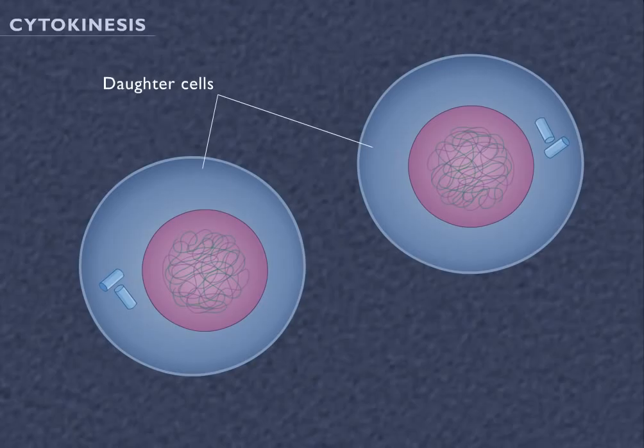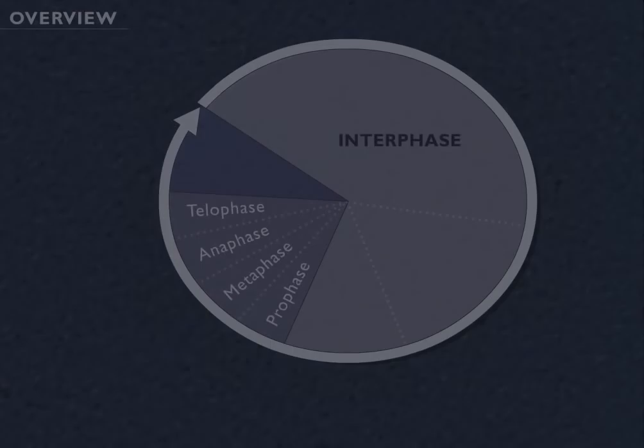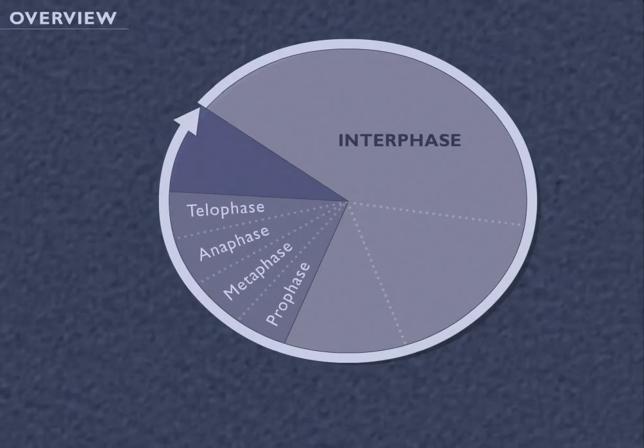To summarize the entire cycle, G1, S, and G2 phases occur during interphase while the cell is growing and preparing to divide.